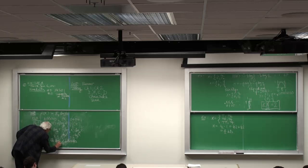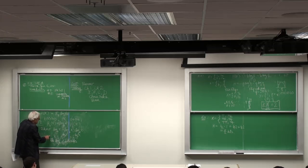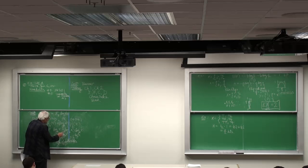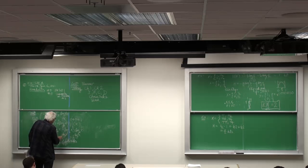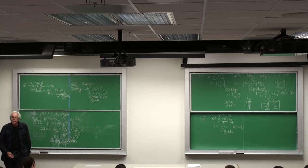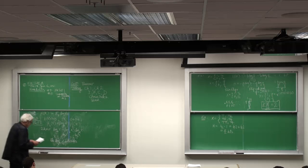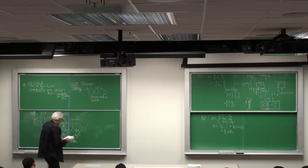Take the log to the base B of both sides. So then this is log to the base B of X equals log to the base A of X times log to the base B of A. You get precisely that. So that's a quick reminder of what we all know.